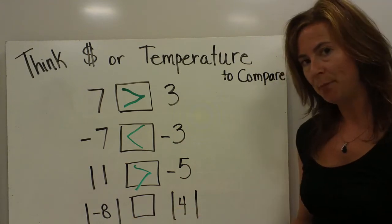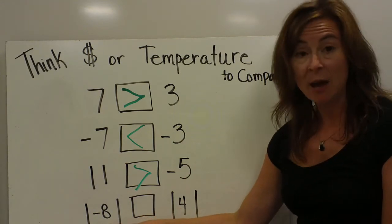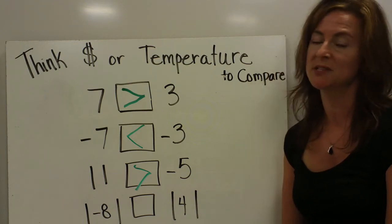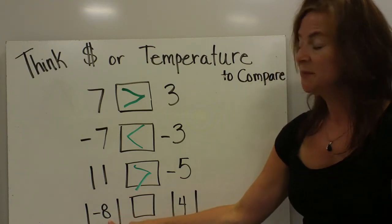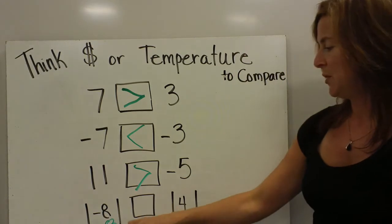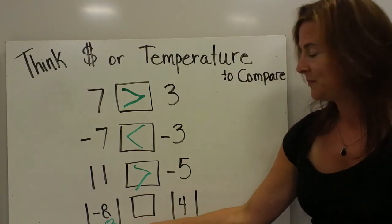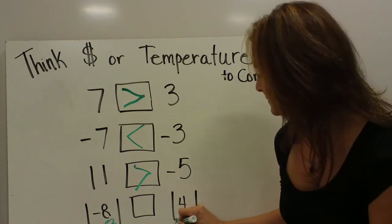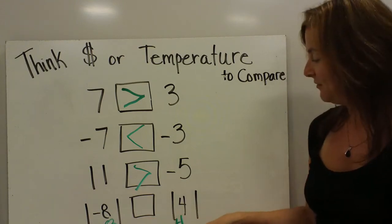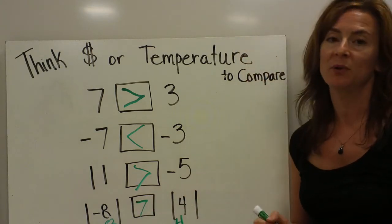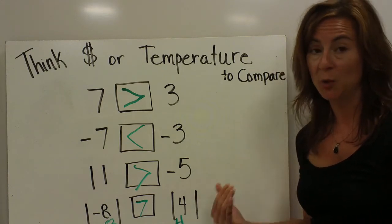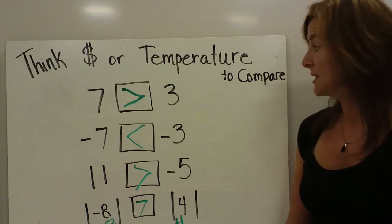Now we have an added step. This reads: the absolute value of negative 8 compared to the absolute value of 4. The first thing I have to do is solve the absolute value. Since absolute value is the number of spaces from 0, negative 8 is 8 spaces, so it equals 8. The absolute value of 4 is 4 — just the number without a sign. So here I'm comparing 8 and 4. 8 is greater than 4, so I put a greater than sign. Remember, numbers to the right on a number line are greater.